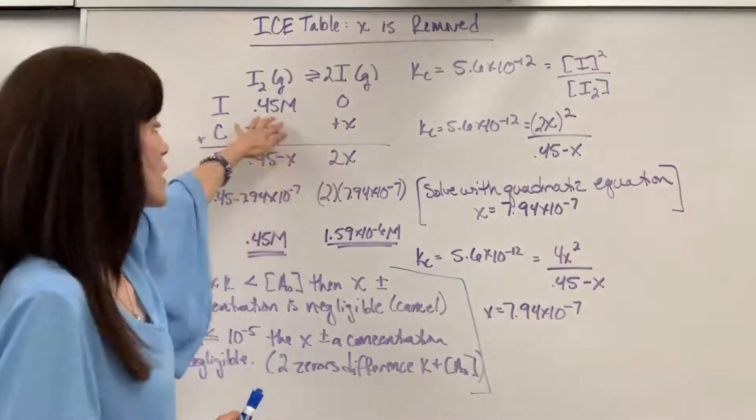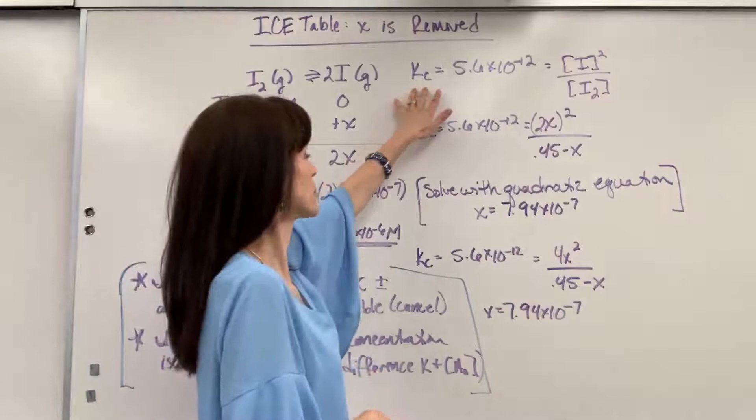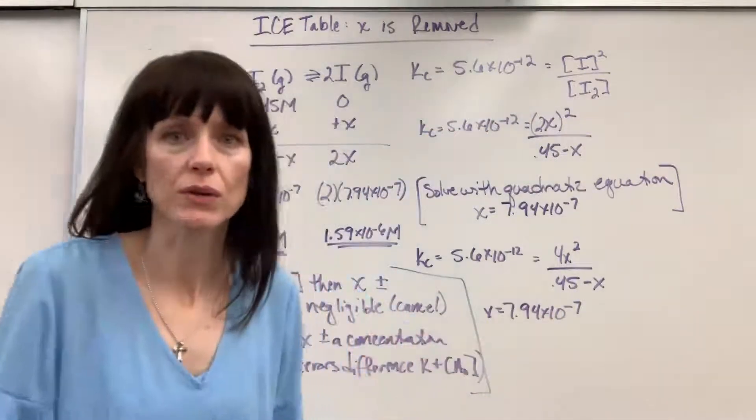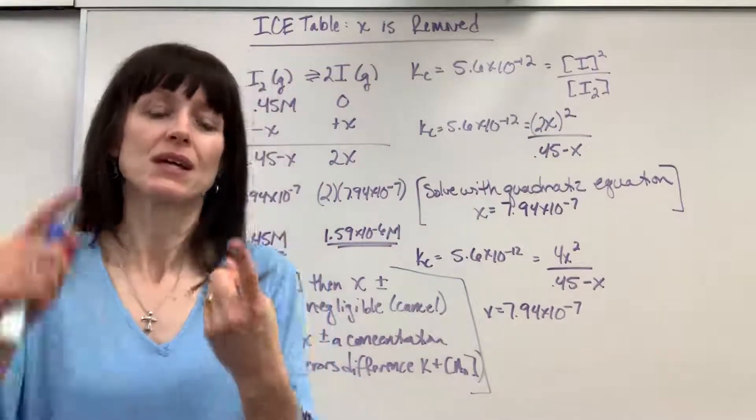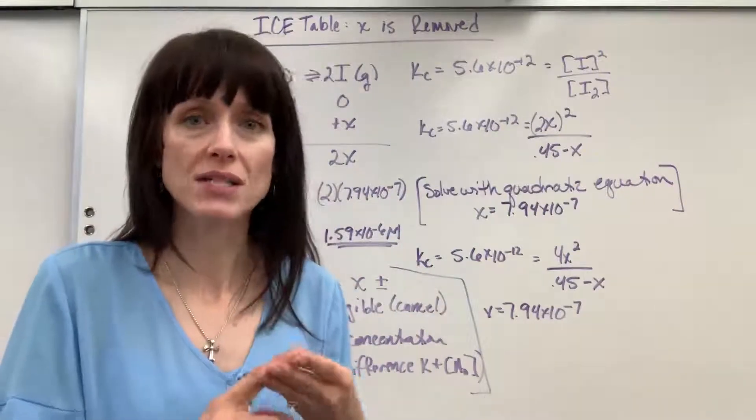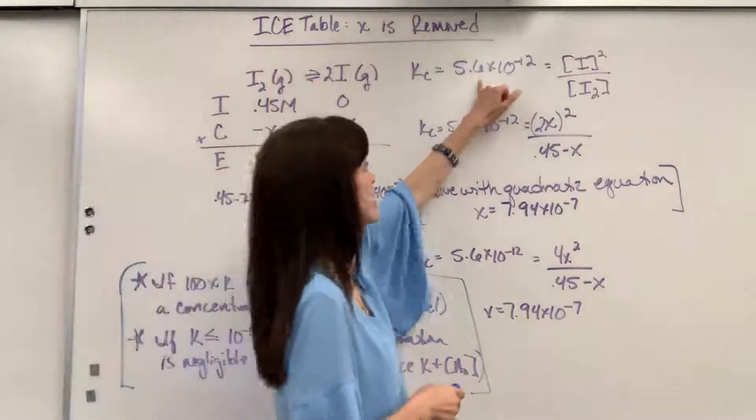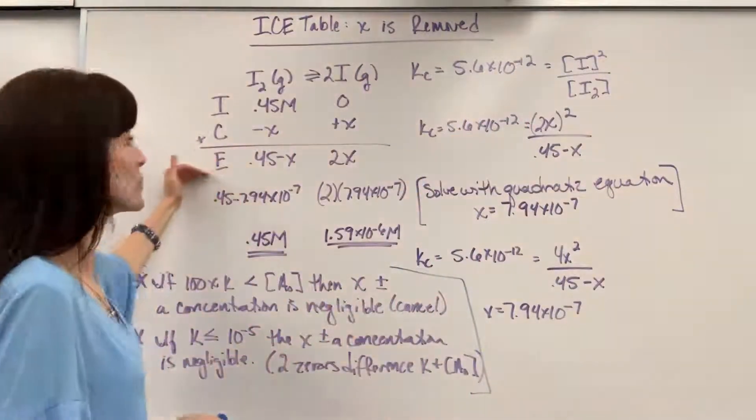We start with an initial concentration of 0.45 and our equilibrium expression, our constant is 5.6 times 10 to the minus 12. So just a really quick review, there are always three pieces of information when we're doing these problems. Initial concentration, equilibrium concentration, and the equilibrium constant. They gave us two of the three, the initial concentration and the equilibrium constant. So you and I are finding the equilibrium concentrations.